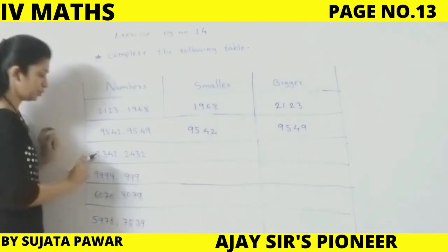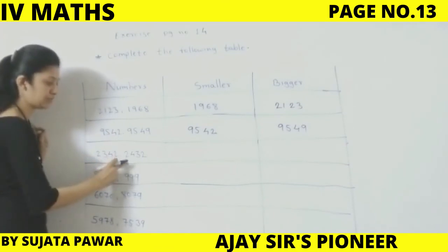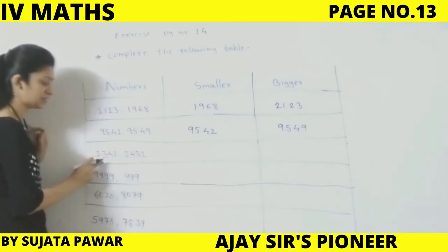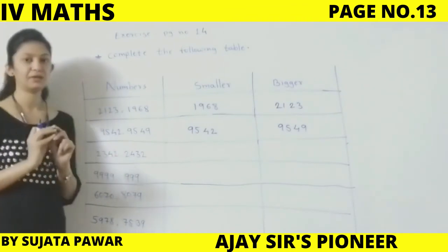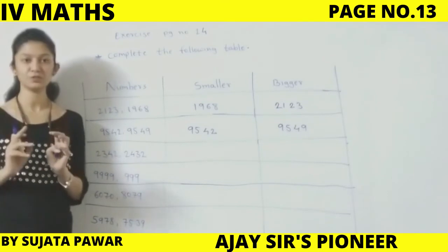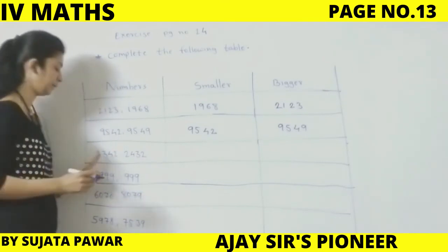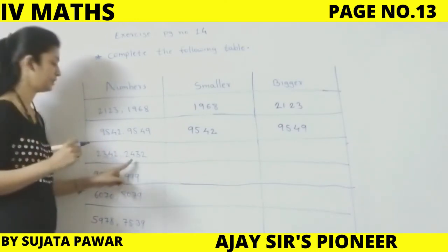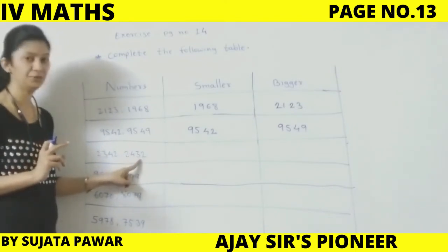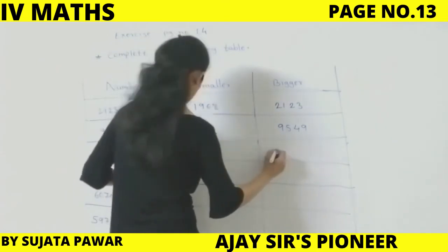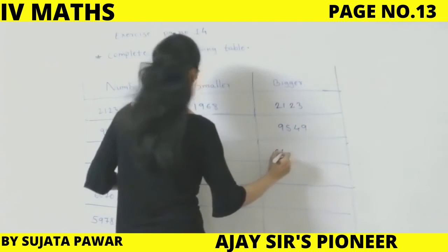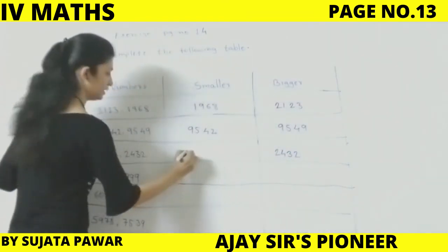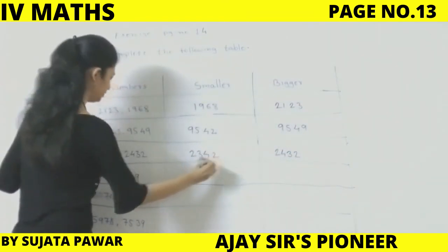Next: 2,342 and 2,432. The 1000s place is the same — both are 2. Now we look at the 100s place: here it is 3, and here it is 4. 4 is bigger than 3, so 2,432 is the bigger number and 2,342 is smaller.